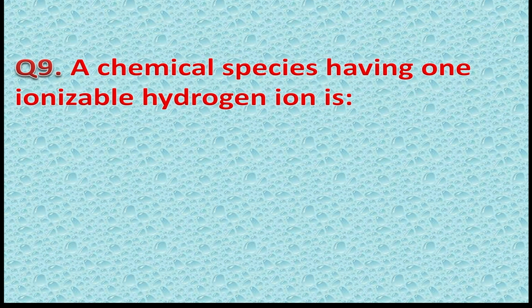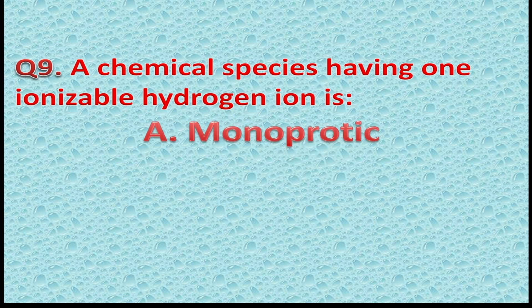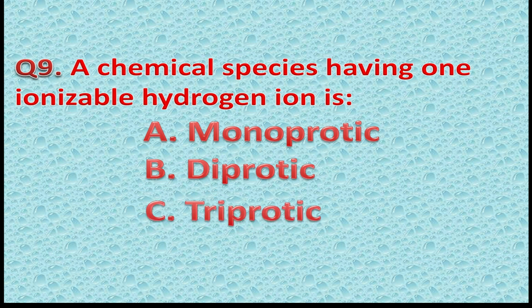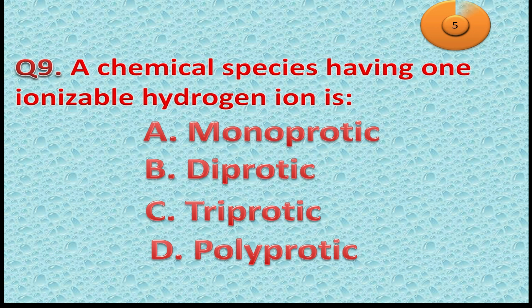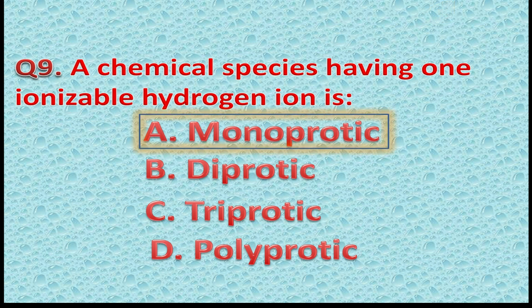Question 9: A chemical species having one ionizable hydrogen ion is — Option A: Monoprotic. Option B: Diprotic. Option C: Triprotic. Option D: Polyprotic. The correct answer is A — Monoprotic. You got one more star in your score if you gave this answer.